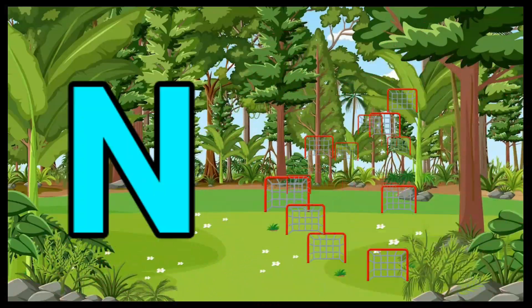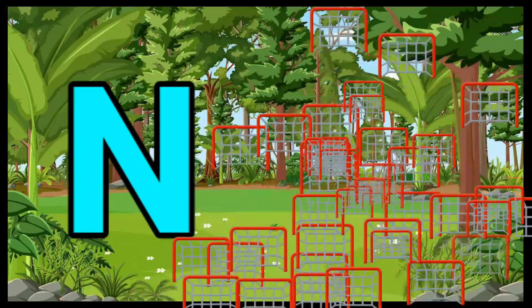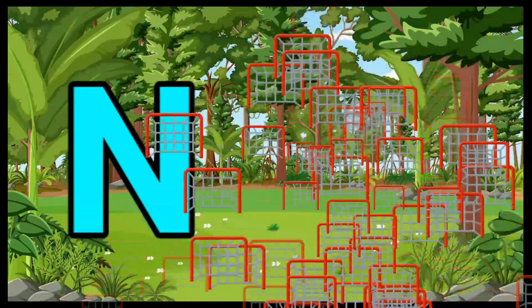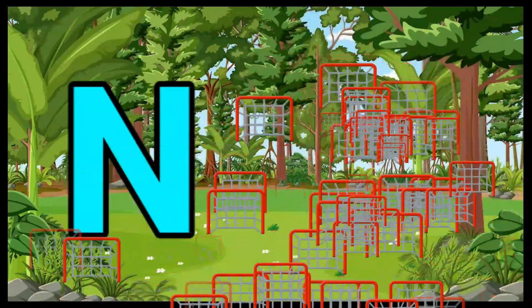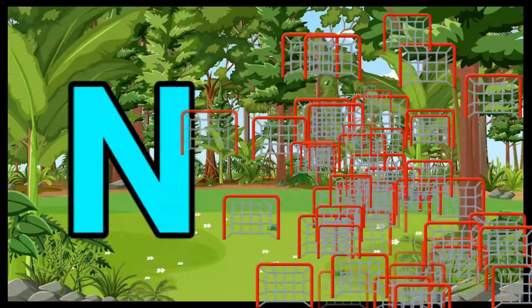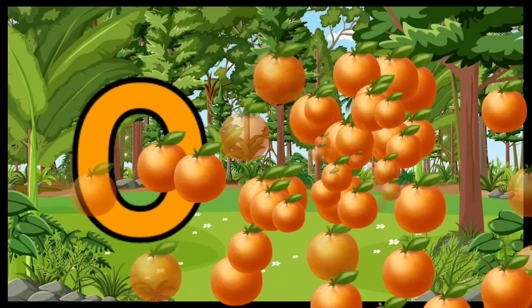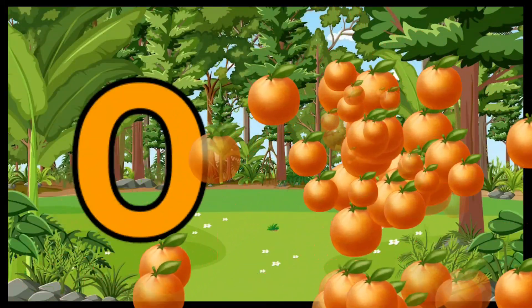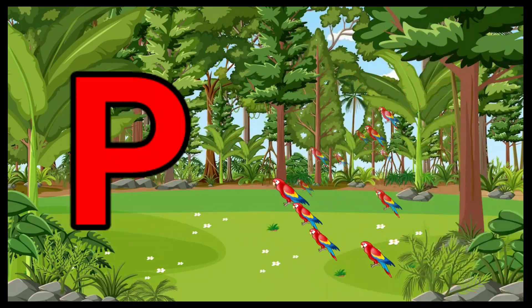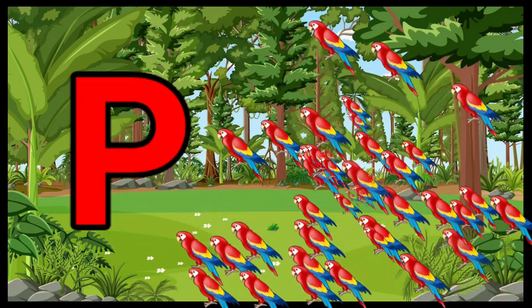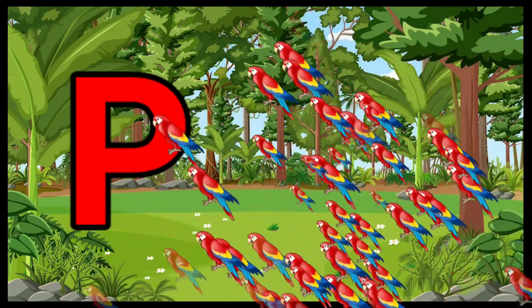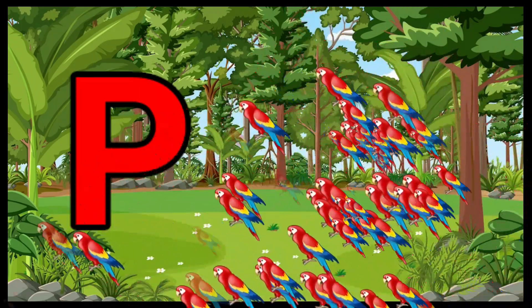N is for Net, N-N-Net. O is for Orange, O-O-Orange. P is for Pet, P-P-Pet.